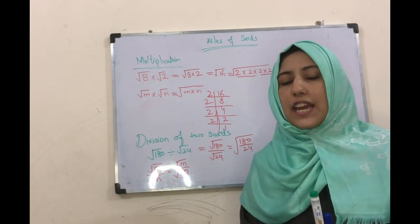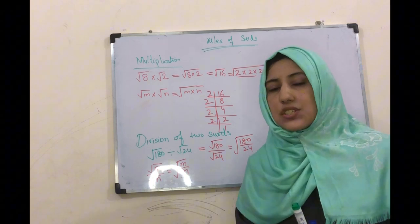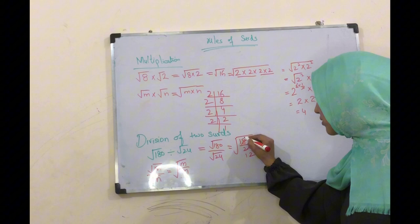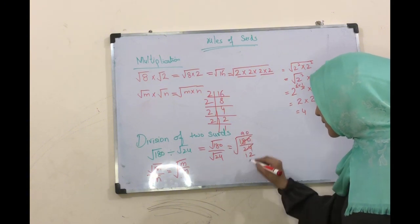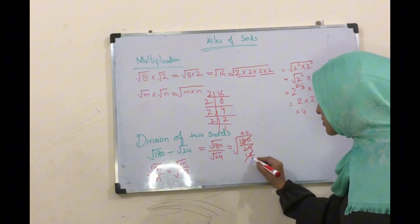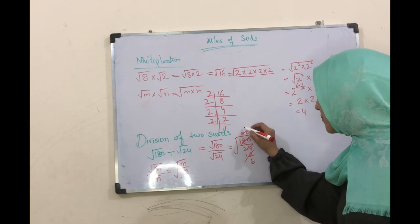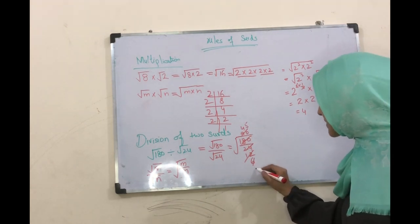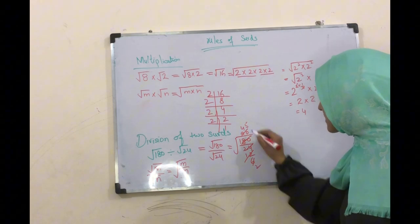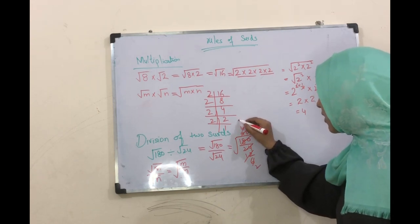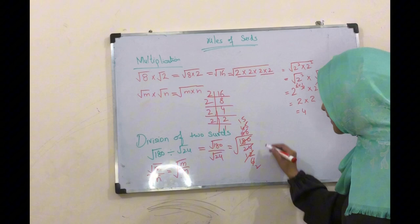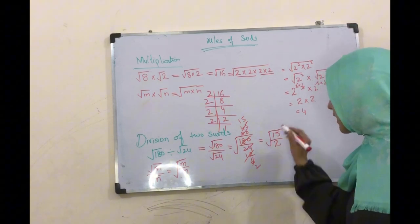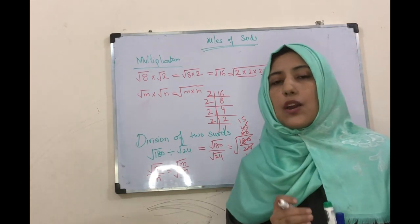یہاں اب ہم نے simplification کرنی ہے، cancellation کرنی ہے۔ تو cancel کرتے ہیں: 2×1=2، 2×2=4، 2×9=18، پھر یہ cancel ہو رہا ہے - 2×6=12، 2×45 آجے گا۔ اور پھر 3 کے table سے بھی cancel ہو رہا ہے: 3×2=6، 3×1=3، 3×5=15۔ تو ہمارے پاس یہ the required answer آجائے گا۔